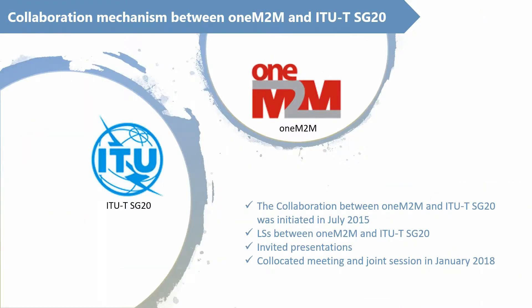This is the collaboration mechanism between oneM2M and ITU-T Study Group 20. The collaboration was initiated in July 2015, from the last study period. After the collaboration was initiated, we created a good exchange of liaison statements — many liaison statements sent from oneM2M to ITU-T Study Group 20, as well as from Study Group 20 to oneM2M. Study Group 20 also nominated liaison rapporteurs to help the collaborations, and oneM2M was invited to give presentations at ITU-T Study Group 20 meetings.